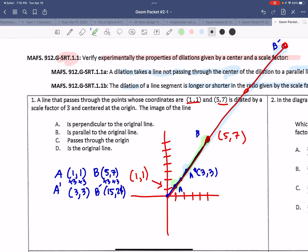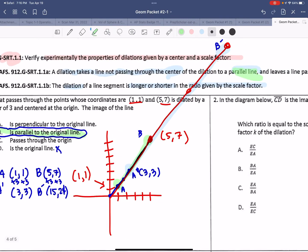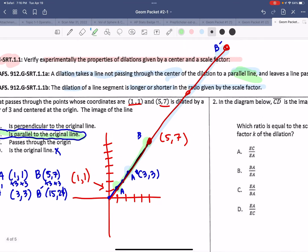Is perpendicular? No. The blue line and the green line are not perpendicular. It looks as if they are parallel to each other. All right. Is it the original line? No. So we found our answer. They're parallel. And this aligns with this learning goal, doesn't it?